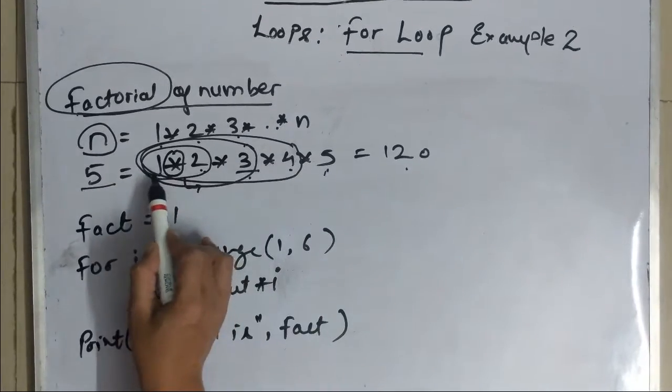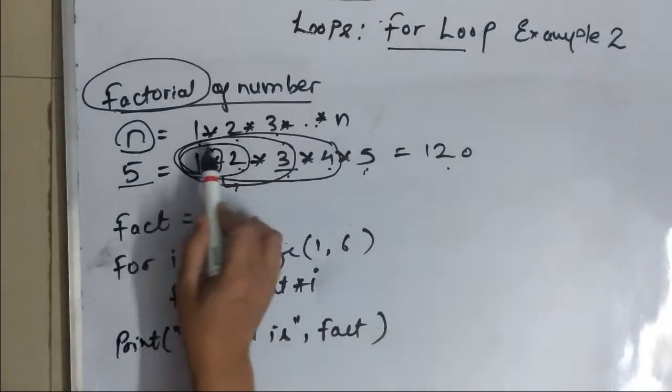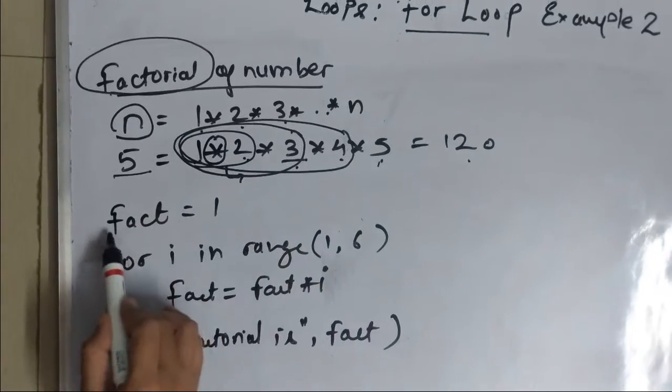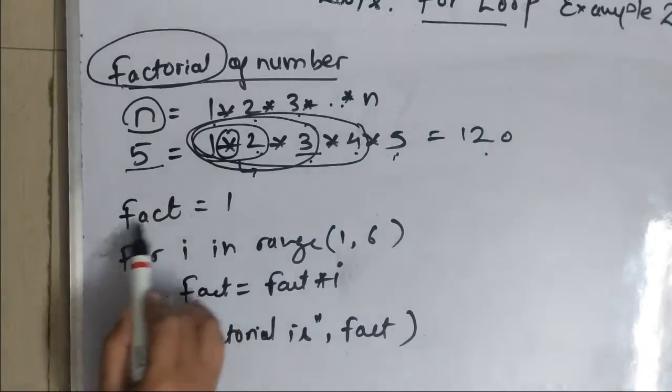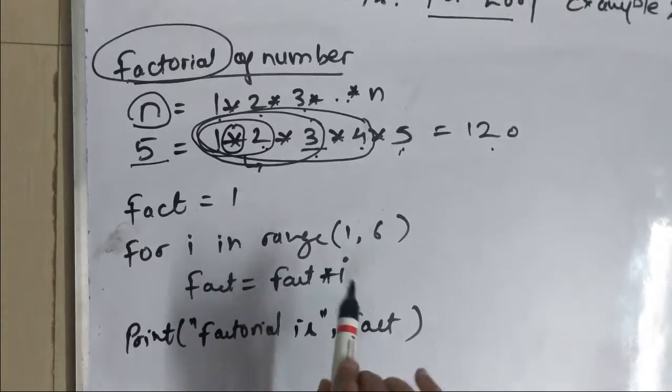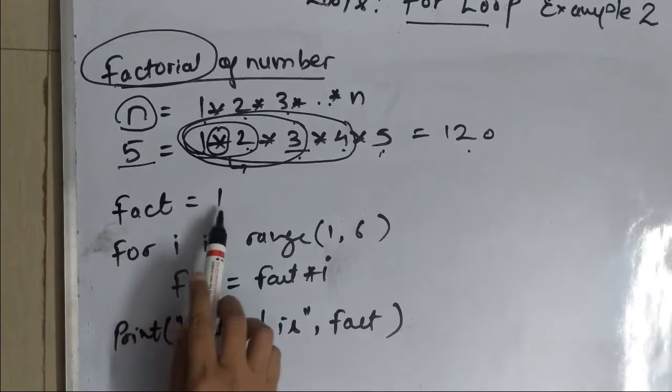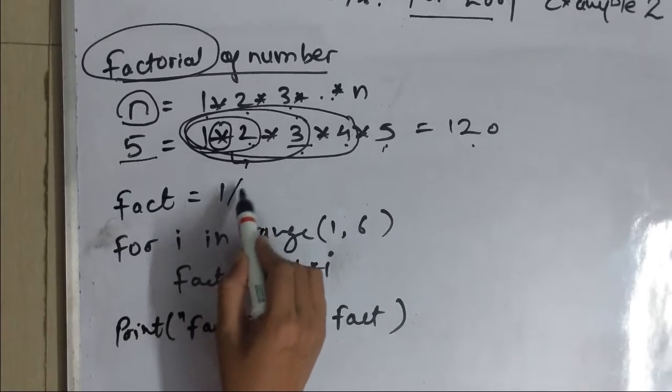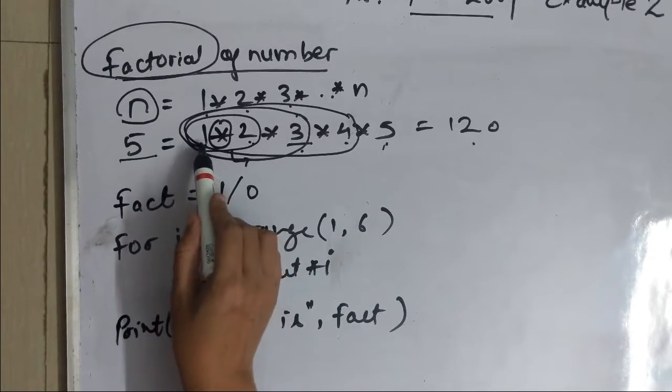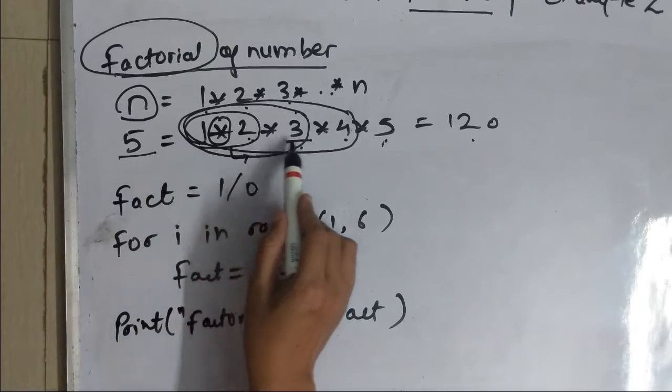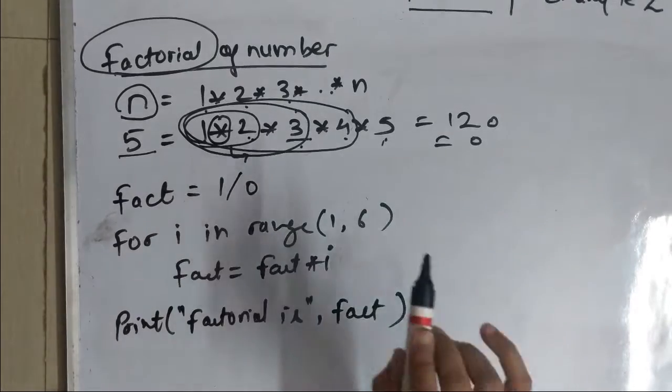In order to store the previously calculated product we are going to initialize a variable fact. This is an example to find factorial of 5. Fact equal to 1. We are going to initialize it with 1 because if you initialize it with 0 it is going to convert like 0 into 1 is going to be 0 then 0 then 0 then ultimately answer will become 0.